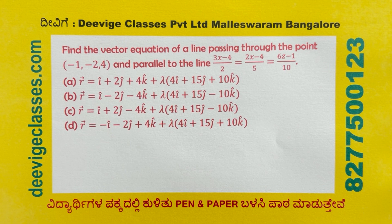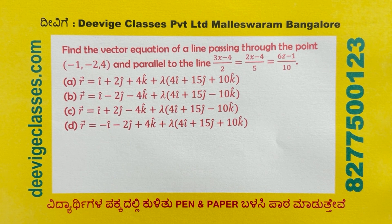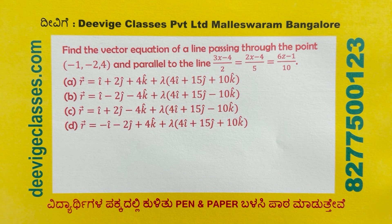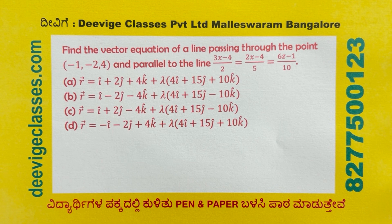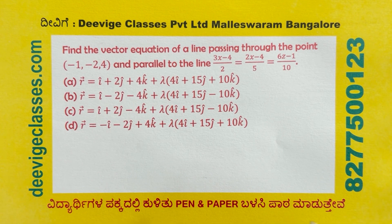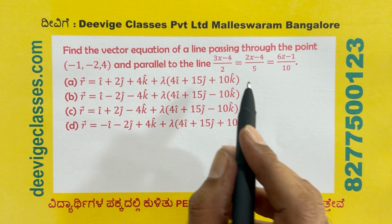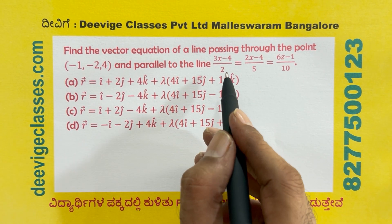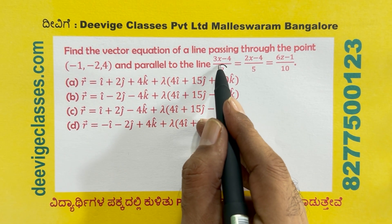Find the vector equation of the line passing through the point (minus 1, minus 2, 4) and parallel to the line: (3x minus 4) over 2 equals (2x minus 4) over 5 equals (6z minus 1) over 10.